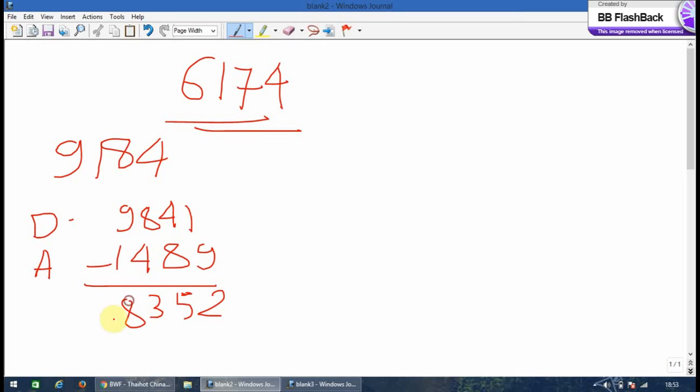Now repeat the same procedure with this number 8352. That is arranged in descending order, you will get 8532. And in ascending order you will get 2358. Now subtract these two numbers. You get 4716. So this is the number we were talking about, 6174.